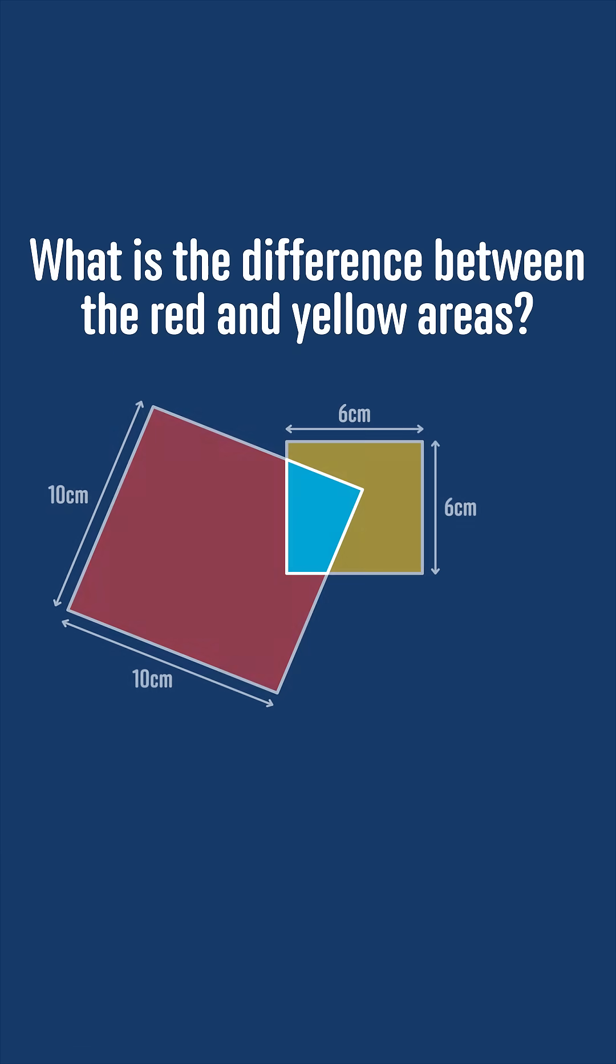Let's suppose for a second that the blue area is 10 centimeters squared, and the larger square has area 10 times 10, or 100 centimeters squared, so the red area would be 100 minus 10, or 90 centimeters squared.